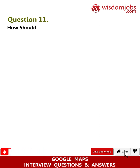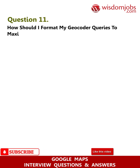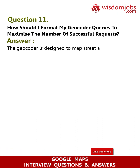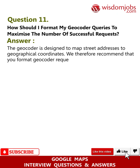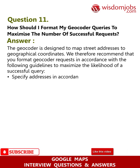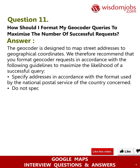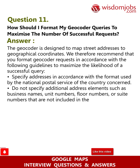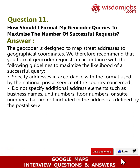Question 11: How should I format my geocoder queries to maximize the number of successful requests? Answer: The geocoder is designed to map street addresses to geographical coordinates. We recommend that you format geocoder requests in accordance with the following guidelines to maximize the likelihood of a successful query. Specify addresses in accordance with the format used by the national postal service of the country concerned. Do not specify additional address elements such as business names, unit numbers, floor numbers, or suite numbers that are not included in the address as defined by the postal service of the country concerned.